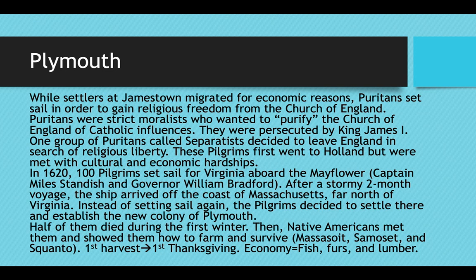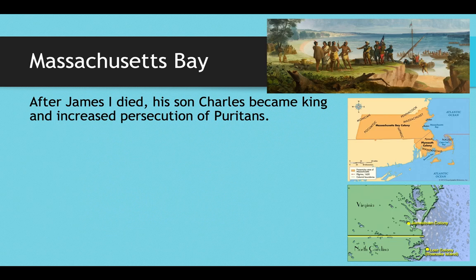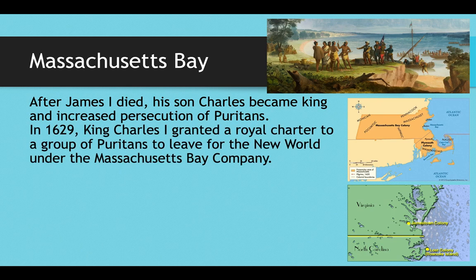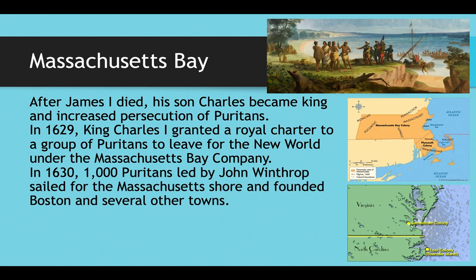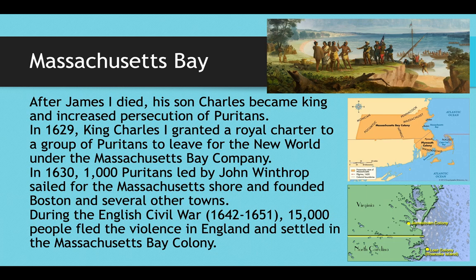The Plymouth colony's economy was based on fishing, trapping furs, and cutting down lumber. After James I died, his son Charles became king and actually increased persecution of Puritans — one factor that led to the English Civil War and his eventual beheading. In 1629, King Charles I, wanting to rid his country of Puritans, granted them a royal charter to leave England for the New World under the Massachusetts Bay Company. In 1630, about 1,000 Puritans led by John Winthrop sailed for the Massachusetts shore, landed just north of Plymouth Colony, and established the Massachusetts Bay Colony, founding Boston and several other towns. During the English Civil War in the 1640s and 50s, 15,000 English people fled to the Massachusetts Bay Colony.